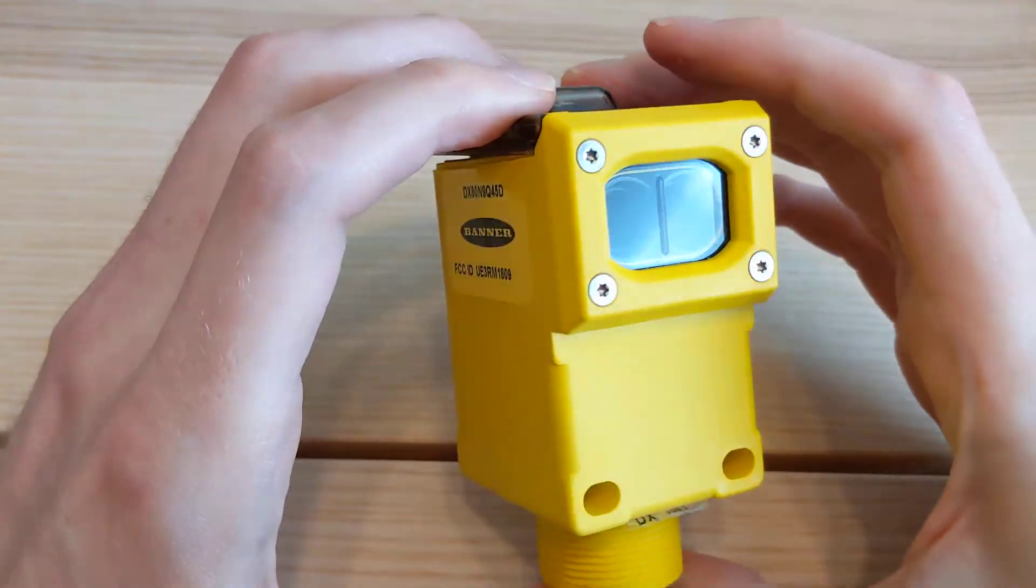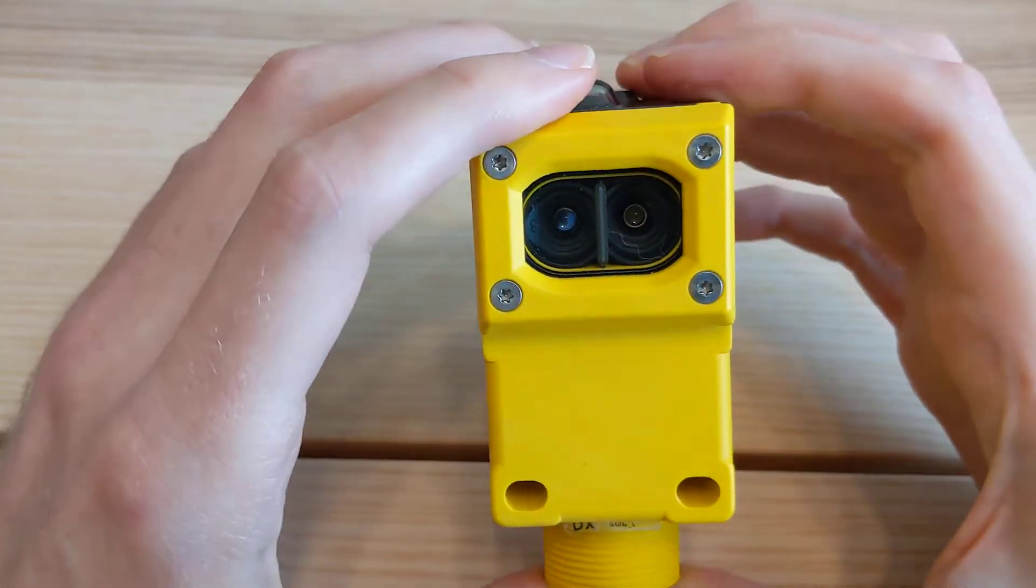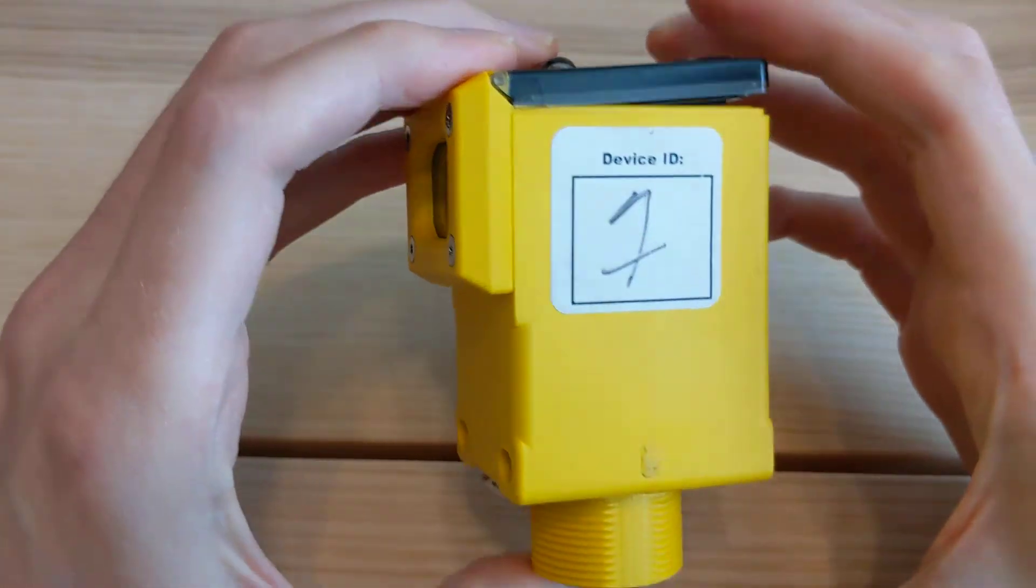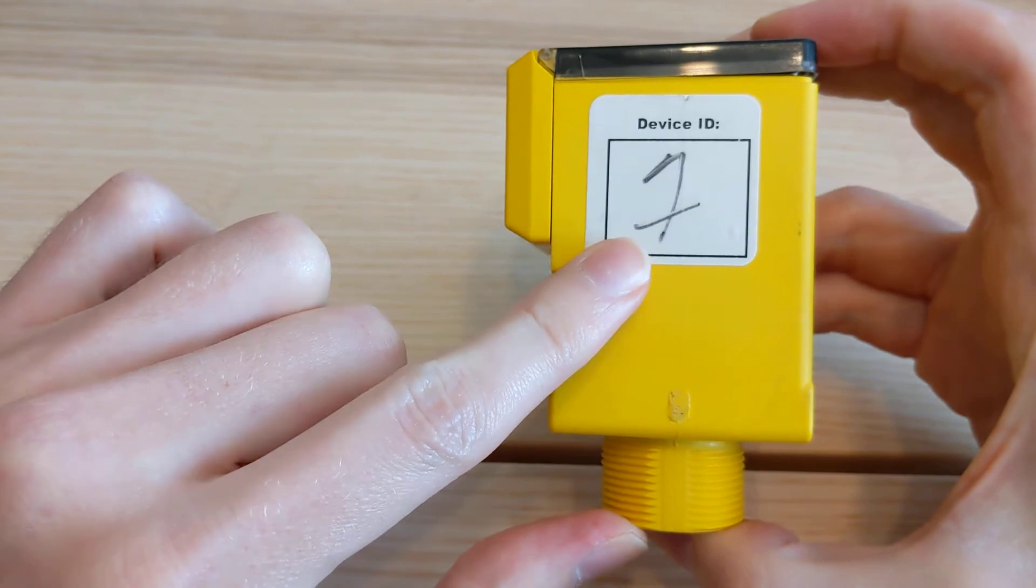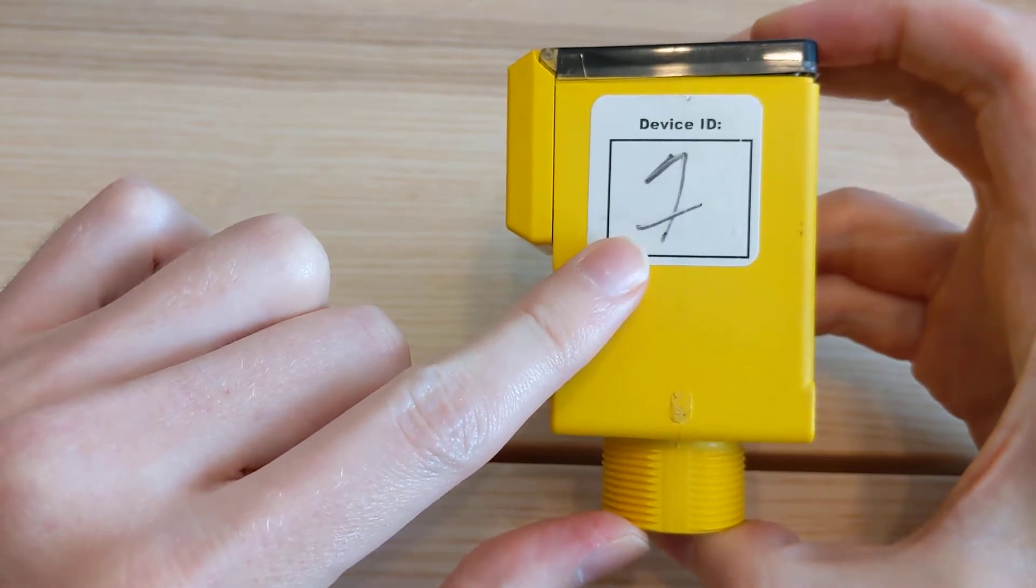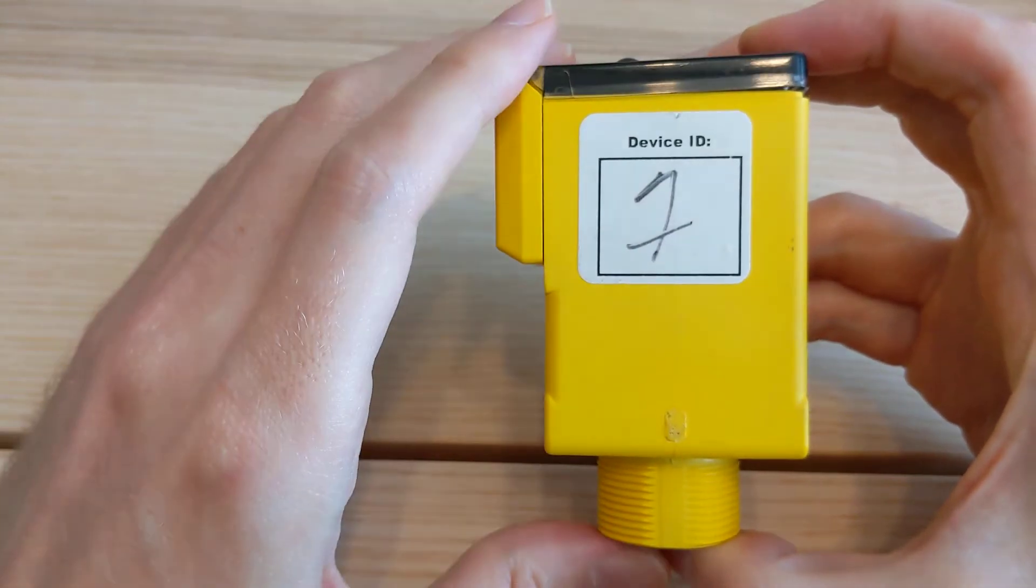The SensorTrack Starter Kit comes with five wireless photo eyes. Each photo eye is pre-configured with a device ID prior to being shipped out. This device ID corresponds to a piece of equipment in your facility.